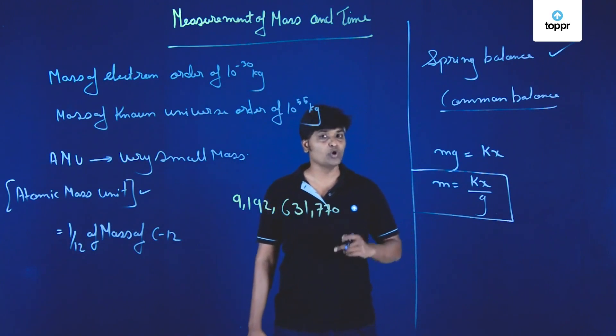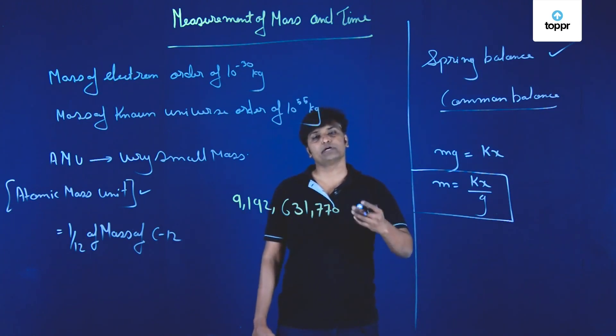So the amount of time taken by the cesium to make these many vibrations is called one second. This one second was then converted into minutes, minutes into hours, and so on.